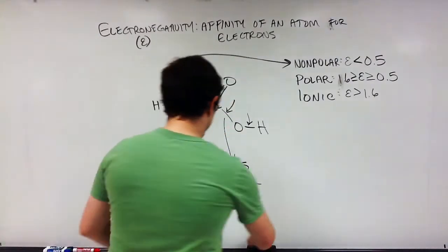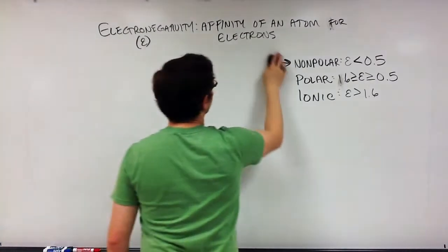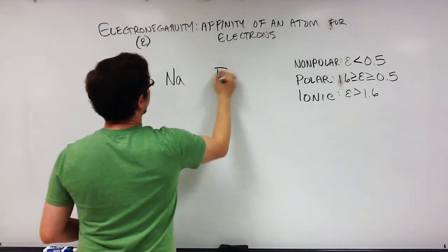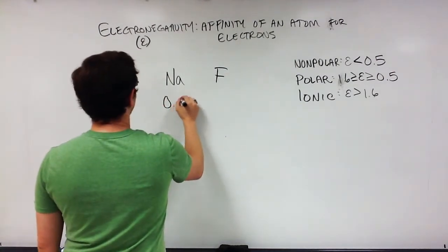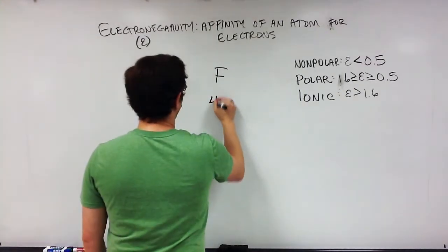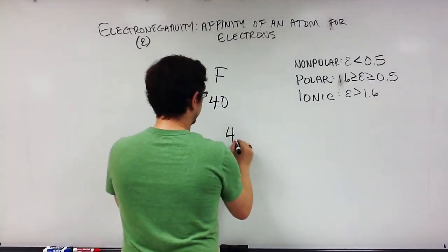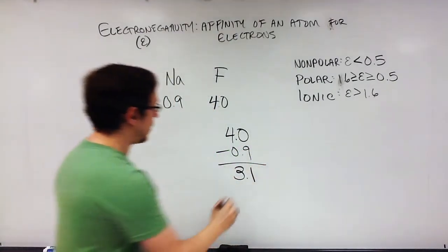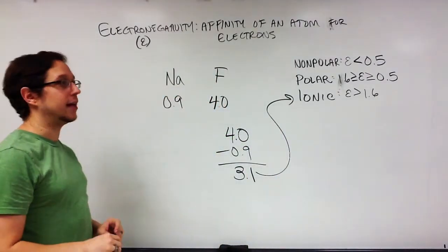Let's say I asked what would happen if sodium and fluorine formed a bond. Sodium, from the chart, has an electronegativity of 0.9, while fluorine has an electronegativity of 4.0. So 4.0 minus 0.9 gives a value of 3.1, which is greater than 1.6. So these two would engage in an ionic bond.